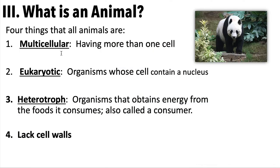So what makes an animal? What did scientists decide are the things all animals need to have in common to separate them from plants, bacteria, or other things? There are four main criteria. First, it has to be multicellular — meaning it has more than one cell. No animal has just a single cell.